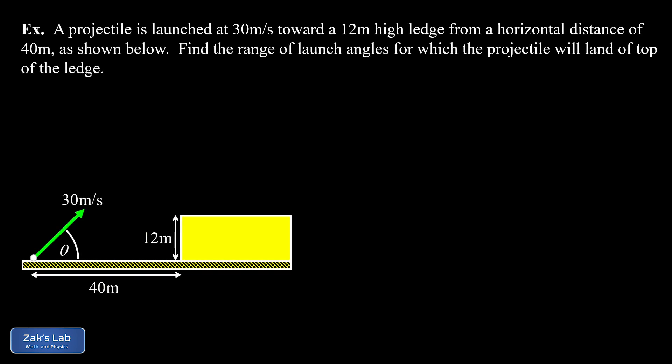In this video, we're solving a projectile motion challenge problem that I recently put on a quiz for my engineering majors. We have a projectile launched with a given speed of 30 meters per second, and it's launched toward a ledge that's 12 meters high and sits 40 meters away from the launch point horizontally.